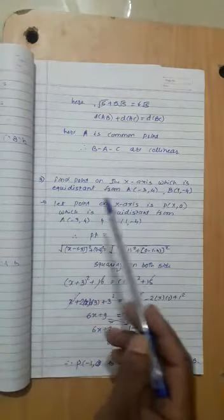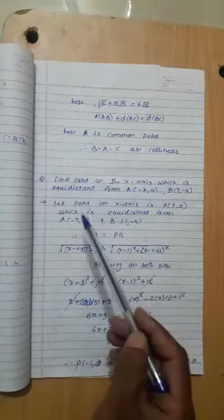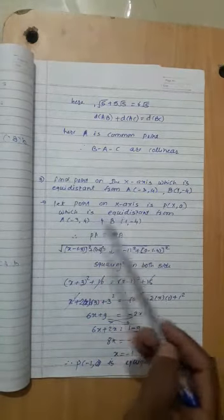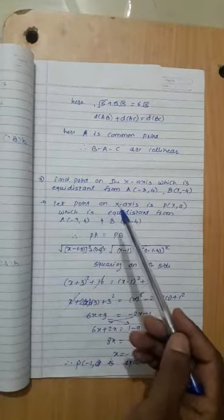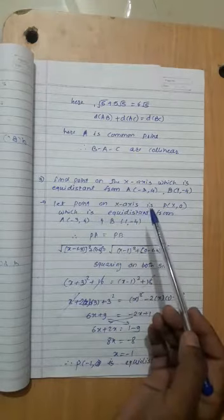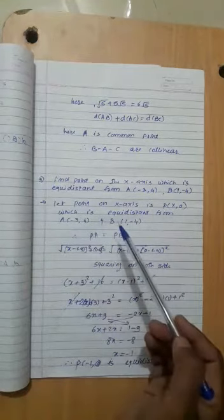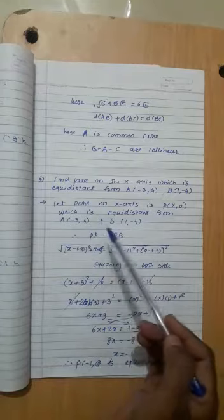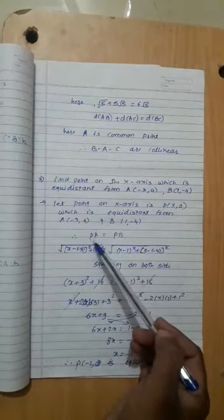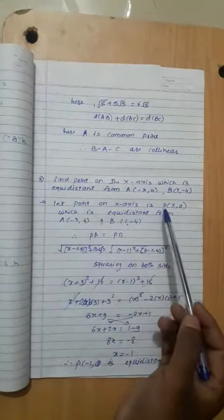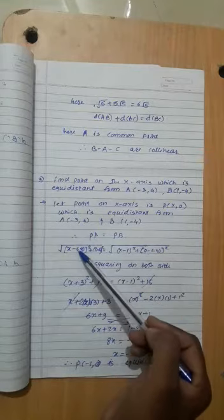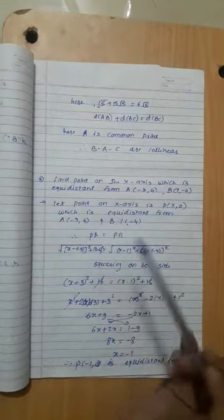Find the point on x-axis which is equal distance from A and B. We assume that point on x-axis is (x, 0), which is equal distance from A and B. Point on y-axis would be (0, y). Distance between PA and PB are equal because P is equidistant. So distance formula: (x minus -3) squared plus (0 minus 4) squared.